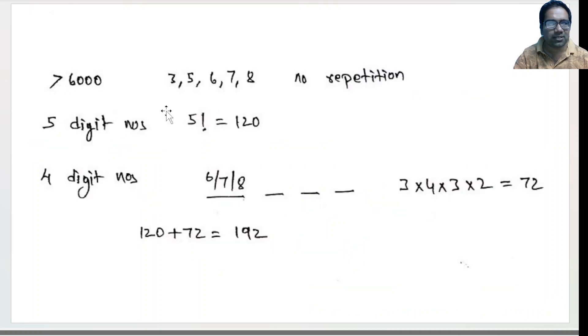All 5 digit numbers with no repetition, that means 5 factorial, right? First, all 5 digit numbers - we have 5 numbers here and 5 digit numbers, that means 5 factorial which is 120.